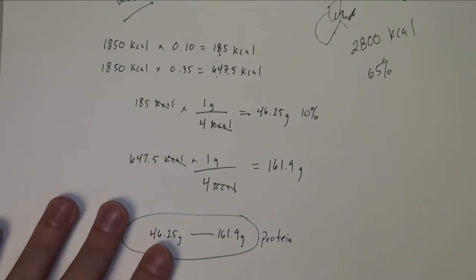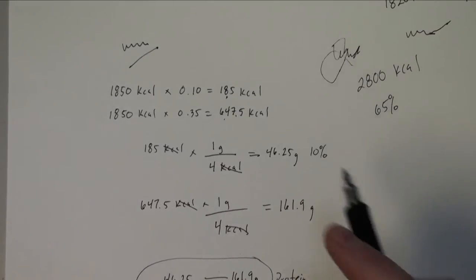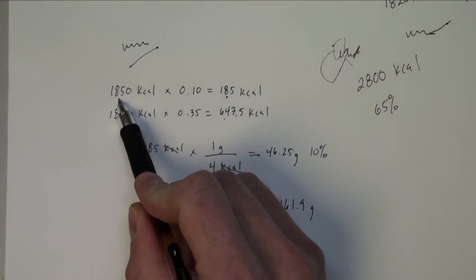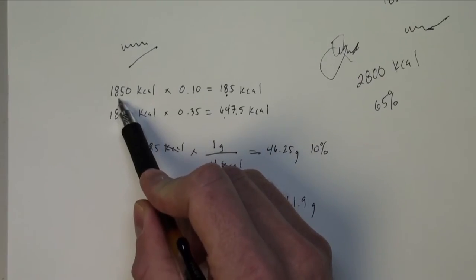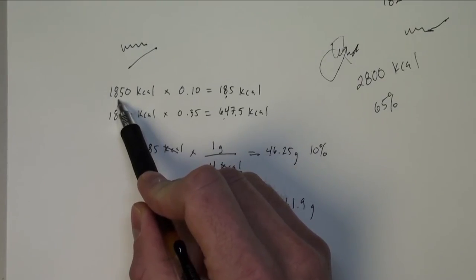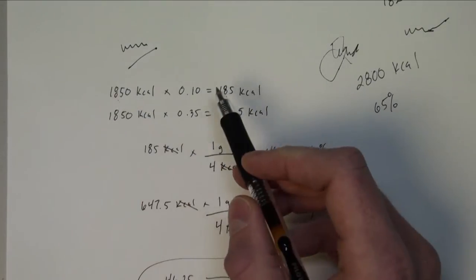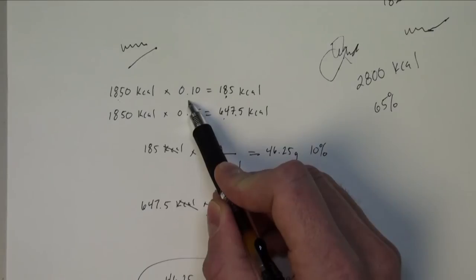So here's some numbers just so we can start doing some calculation. So here's the total number of calories we had talked about, 1,850. To figure out 10% of those calories, or what 10% of 1,850 is, we can multiply that by 0.10.